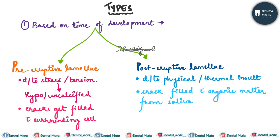Whereas in post-eruptive lamellae, the tooth is already erupted in the oral cavity. If there is any physical or thermal insult to which the tooth is exposed, a crack is developed. This crack gets filled with the organic matter from the saliva. These are the two types of lamellae — pre- and post-eruptive — based on the time of development.